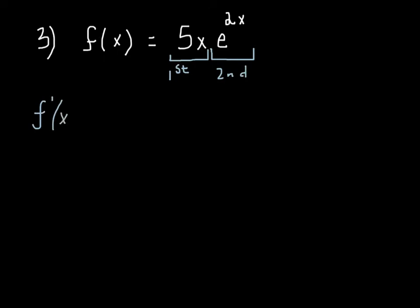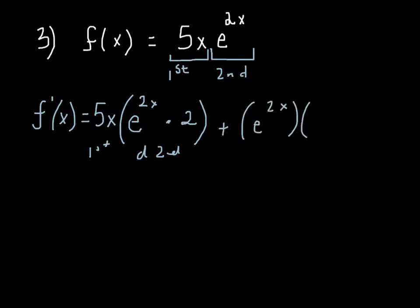So let's go with this. f'(x) is going to be the first times the derivative of the second. So the derivative of e to the 2x is e to the 2x times the derivative of the power, which is 2. So again, the first times the derivative of the second plus the second, I'm just going to write it in parentheses to make our work easier, times the derivative of the first. So you're all done.